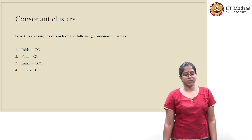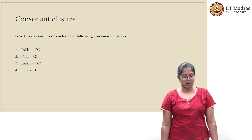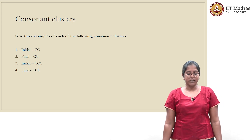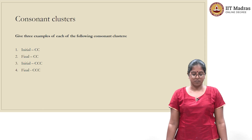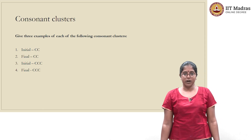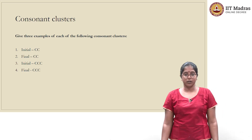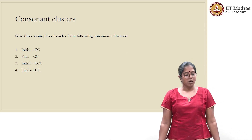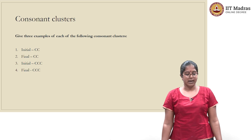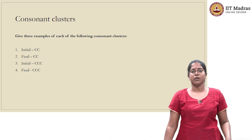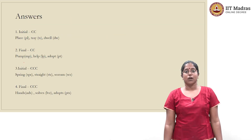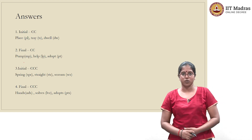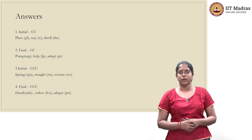The next question is about consonant clusters. Give three examples of each of the following: word-initial consonant cluster CC, word-final consonant cluster CC, word-initial consonant cluster CCC, and word-final consonant cluster CCC. Pause the video and work on the questions. The words you come up with could be different from what I have chosen — I'll explain why I chose these words so you can evaluate your own answers.